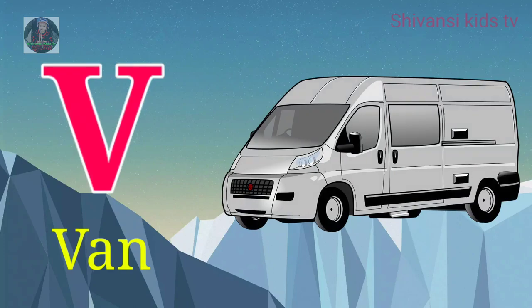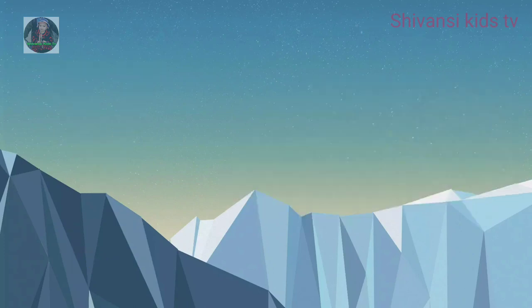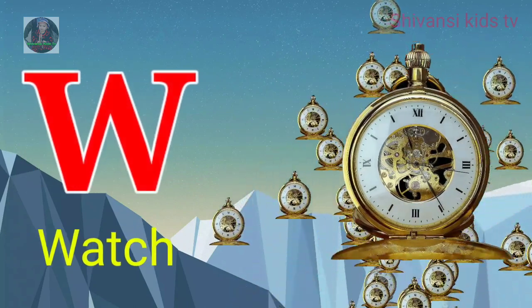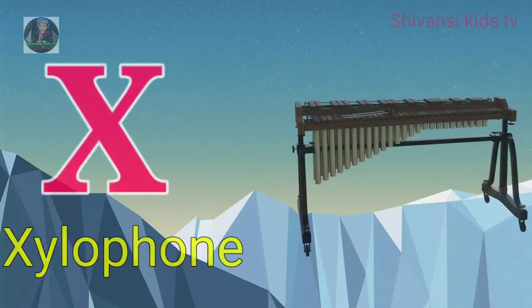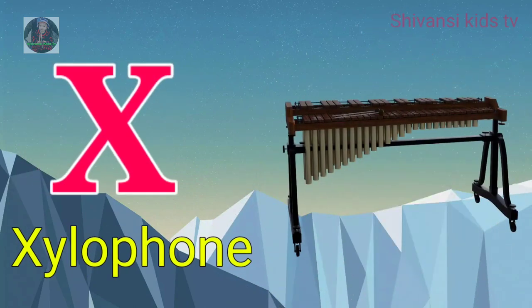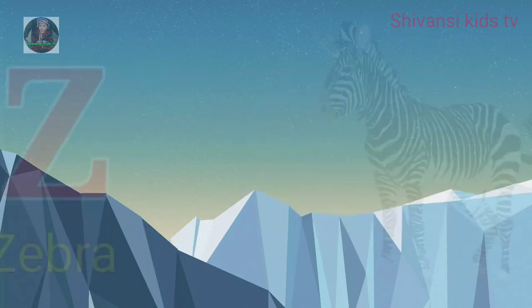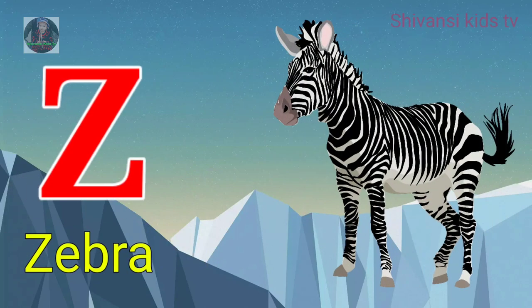B for man, W for watch, X for gelo phone, Y for yard, Z for zebra.